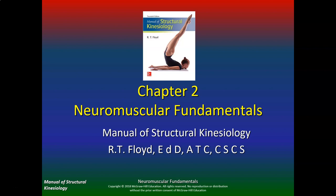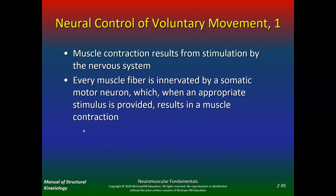Alright class, hopefully you had a good enough break there. Let's start with neural control of voluntary movement. We need some kind of mechanism where the brain says okay, time to contract those quads, time to contract those hamstrings. Muscle contraction results from stimulation by the nervous system, and every muscle fiber is innervated by a somatic motor neuron, which when appropriate stimulus is provided results in a muscle contraction.